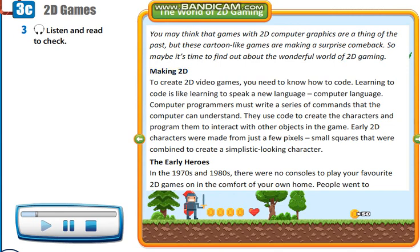Making 2D. To create 2D video games, you need to know how to code. Learning to code is like learning to speak a new language — computer language. Computer programmers must write a series of commands that the computer can understand. They use code to create the characters and program them to interact with other objects in the game. Early 2D characters were made from just a few pixels, small squares that were combined to create a simplistic-looking character.